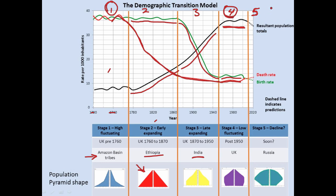A lot of models include a stage five. In stage five, what countries start to see is that their death rates may go up and birth rates may go down — people are having fewer kids and more people are dying, possibly because the population is older. The population might start to decrease. Examples where this is happening would be Russia, Germany, and Japan — pretty highly developed countries where the population is actually declining over time.